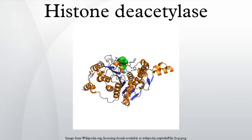HDAC6 is associated with aggresomes. Misfolded protein aggregates are tagged by ubiquitination and removed from the cytoplasm by dynein motors via the microtubule network to an organelle termed the aggresome. HDAC6 binds polyubiquitinated misfolded proteins and links to dynein motors, thereby allowing the misfolded protein cargo to be physically transported to chaperones and proteasomes for subsequent destruction.